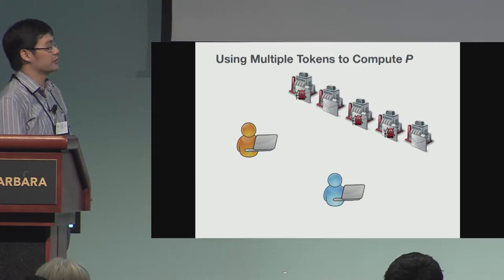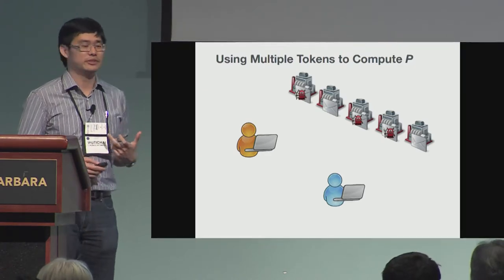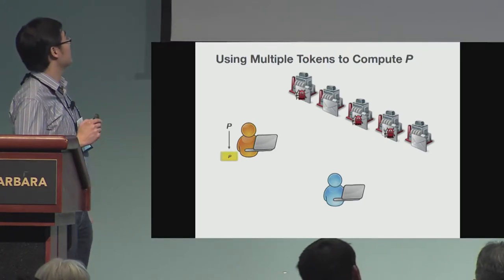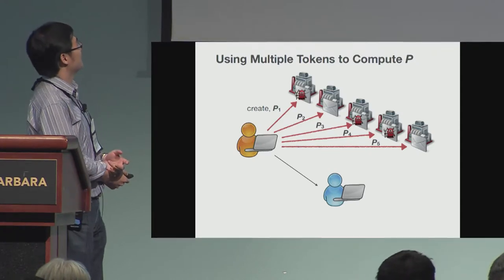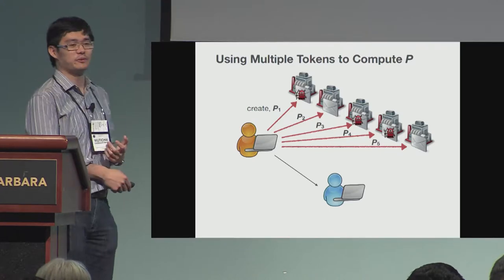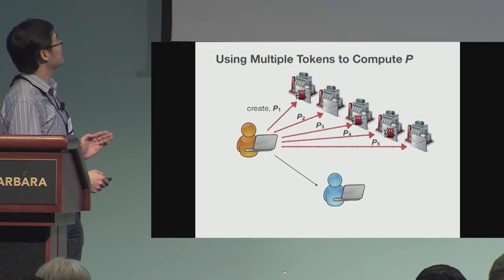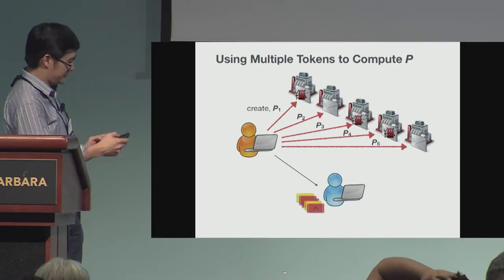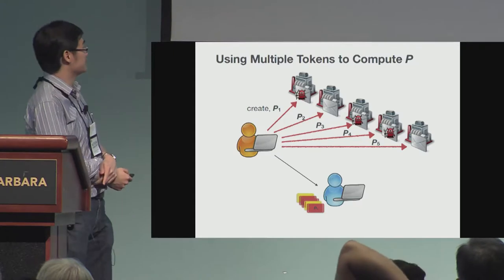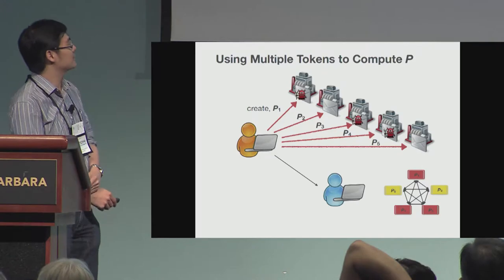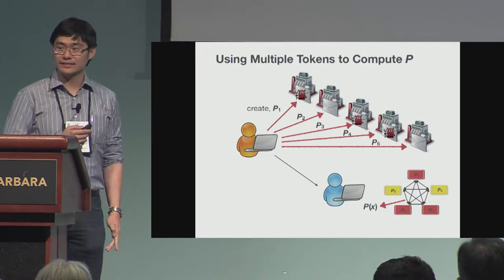Here is the setup that we are interested in. We have several manufacturers, some of which can be corrupt, and both sender and receiver don't know which one is corrupt. When the sender wants to send a token that embeds a program P, he will create a bunch of programs — P1, P2, up to P5 in this example — each of which doesn't reveal the program P by itself. He sends each one to each manufacturer, receives a number of tokens (some of which can be corrupt), and then sends all of them to the receiver. The receiver uses all these tokens and executes them in a way that he can get the output P(X).